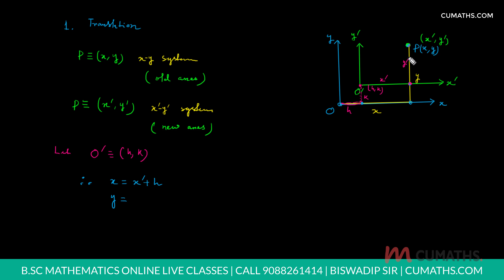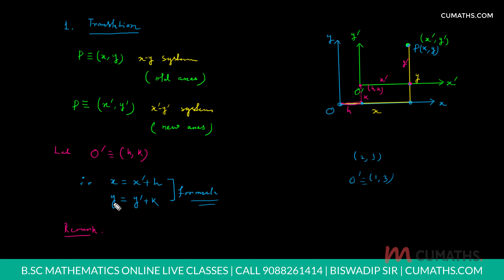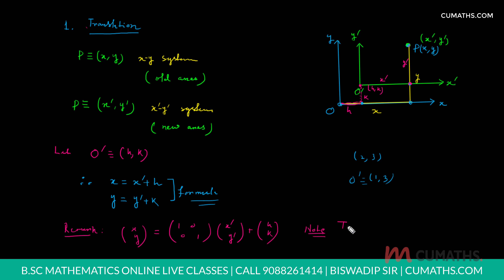We can write y dash plus k equals y. This formula can also be written in matrix form: the column vector (x, y) equals the identity matrix times (x dash, y dash) plus the column vector (h, k). Translation is an orthogonal transformation.